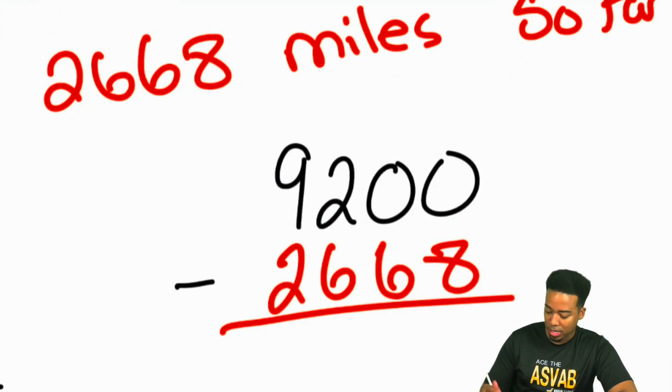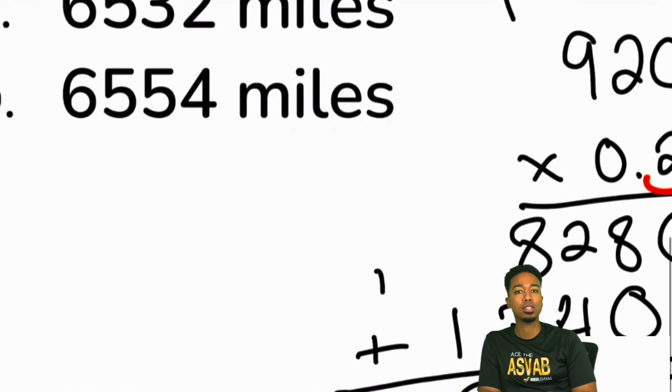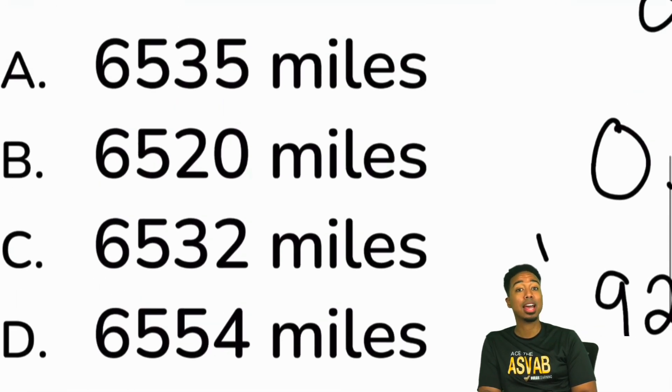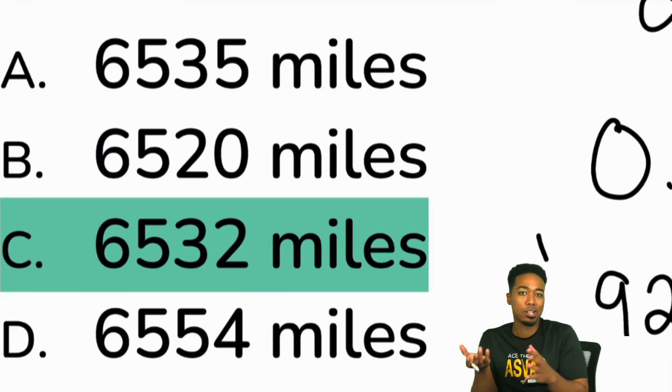it's going to give you an answer ending in 2 because you're obviously going to have to borrow to get a 10 here. 10 minus 8 is 2. So you know your answer ends in a 2. Yes, I am lazy. I know that the answer will be C. And you're good.